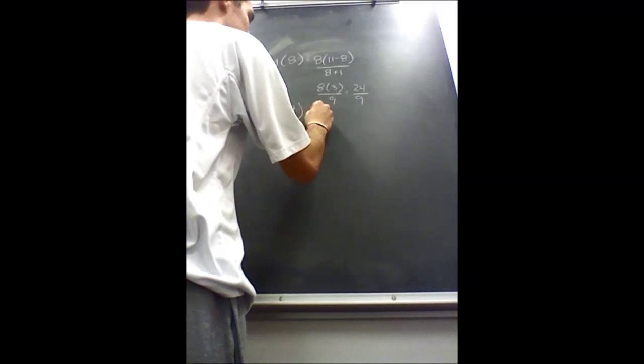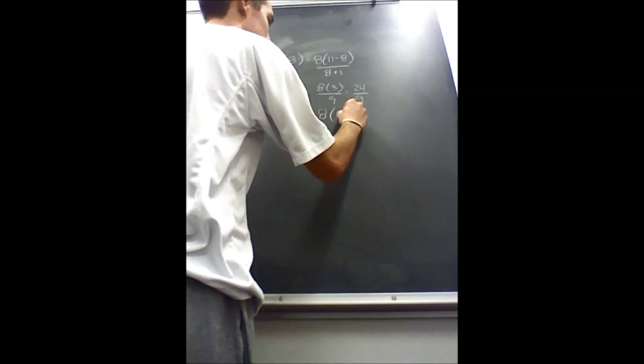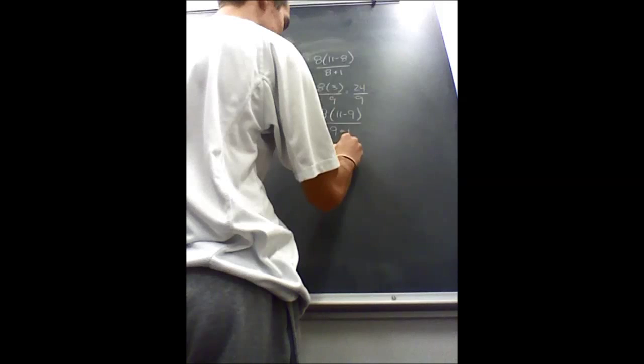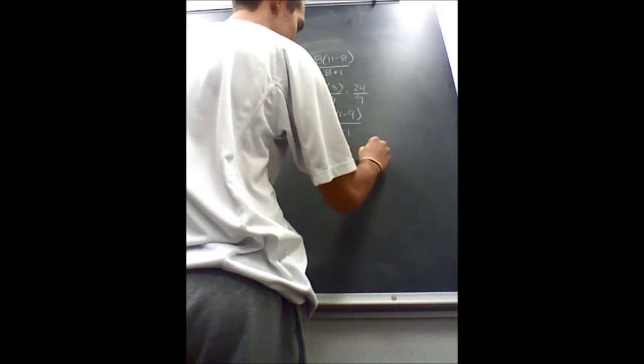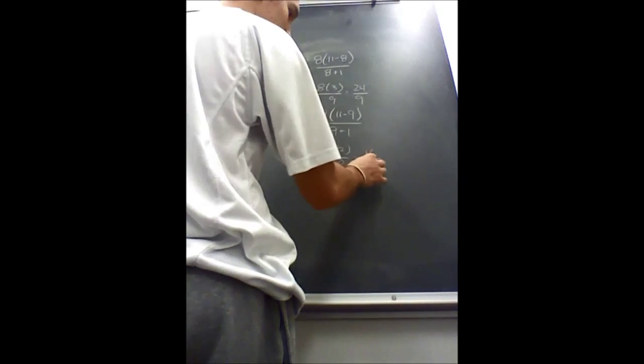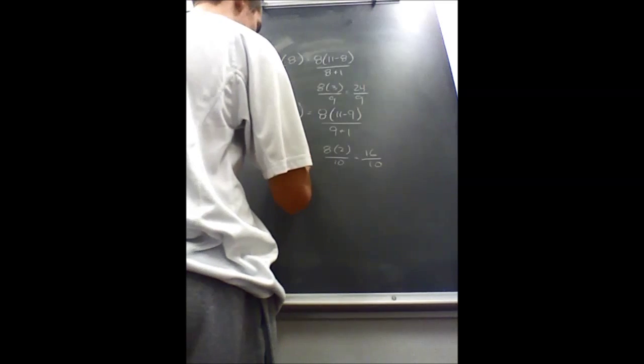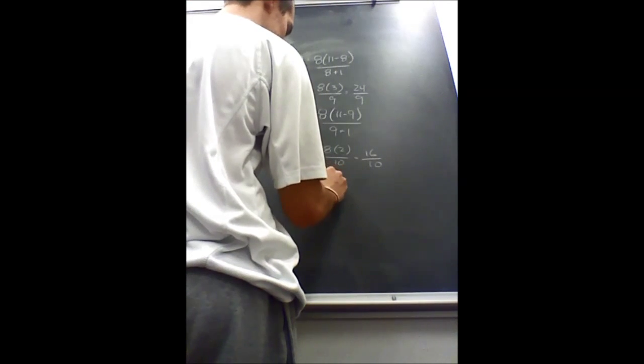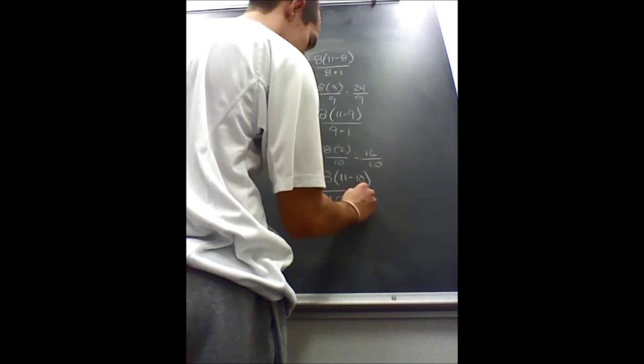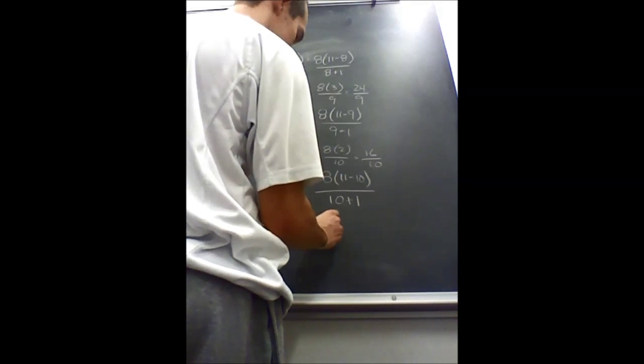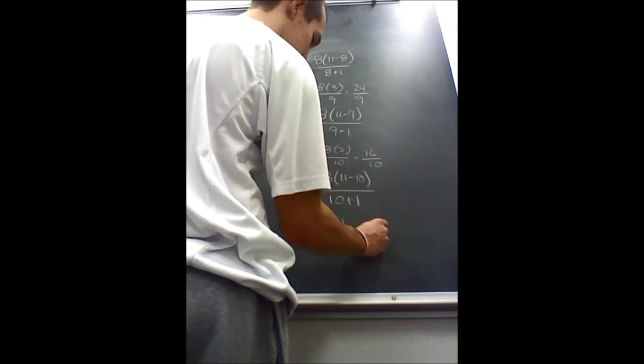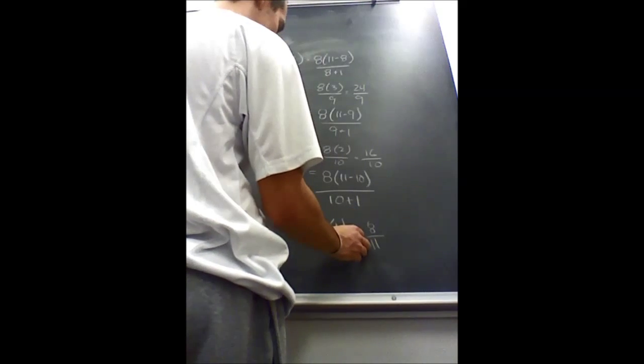Then you continue with 9, which is 8 times 2 over 10, which is getting very close to 1 but not quite. You can try y of 10, and that equals 8 times 11 minus 10 over 10 plus 1, which turns into 8 times 1 over 11, which is 8 over 11, which is less than 1.